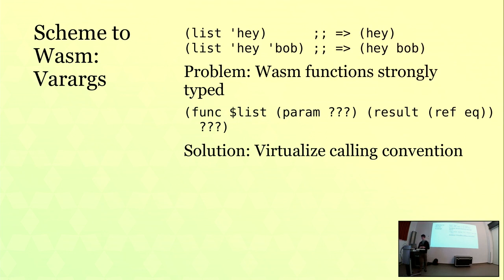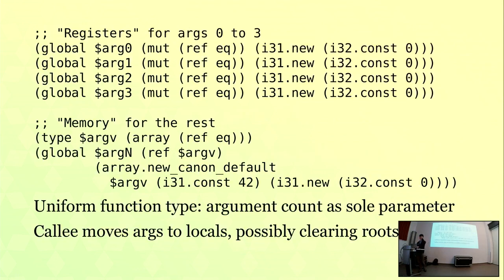The solution is a bit gnarly but a local transform, not a whole-program transform. We effectively do what the x86-64 calling convention does: allocate some number of registers to the first N parameters, and otherwise require parameters to be passed in memory. When you call a function, you pass the number of parameters. Given that number, the function will know whether it's the right number and where to find the values — for example, with five parameters, they'll be in arg0, arg1, arg2, arg3, with one in memory. Our uniform function type takes one parameter: the number of arguments.